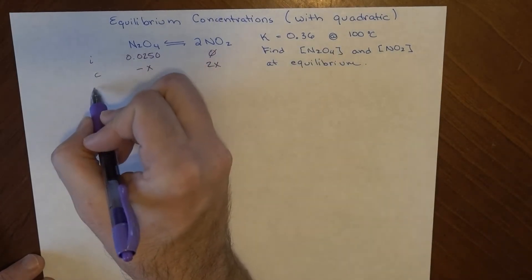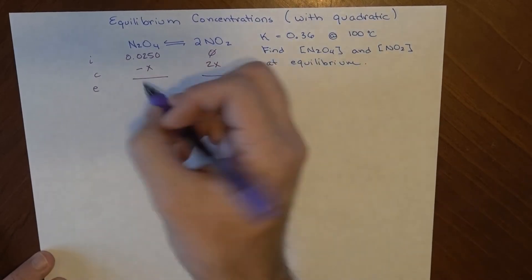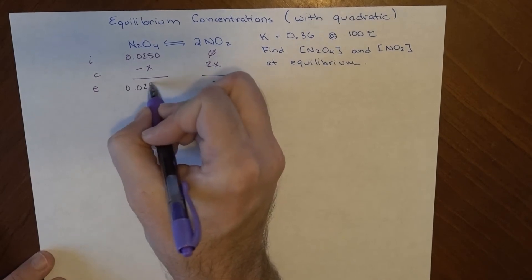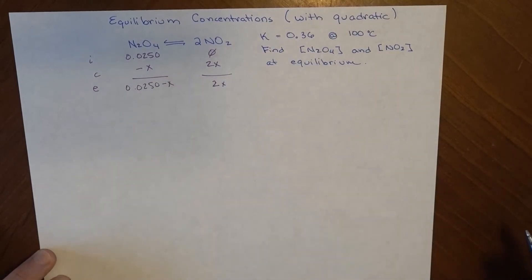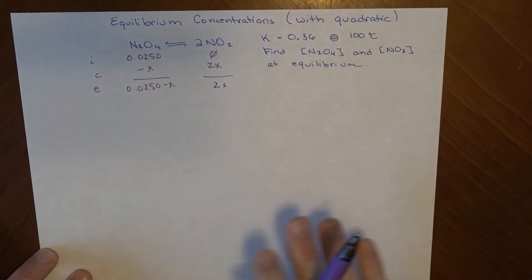And that's our change. And then at equilibrium, 2x of this has formed, and 0.0250 minus x of this is what remains. So these are the actual amounts that I need to find, except for that pesky x.